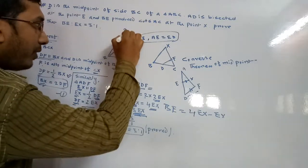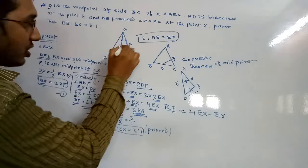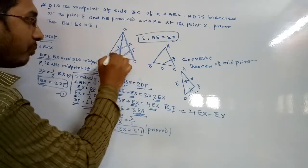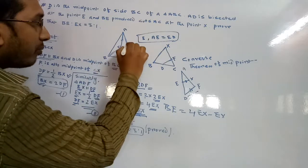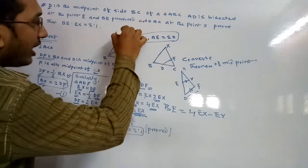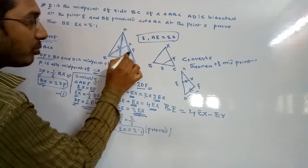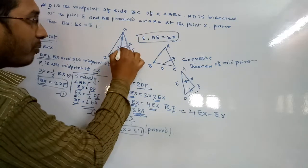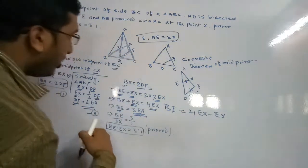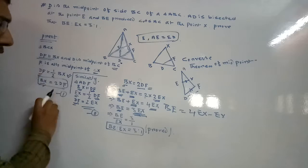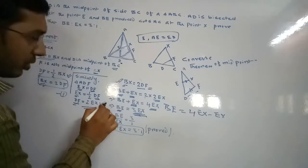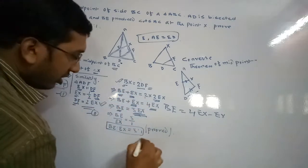So BE ratio EX equals 3 is to 1. In this question, we first took triangle BCX where DF is parallel to BX, then triangle ADF where DF is parallel to EX, giving EX equal to half of DF. Putting the second equation's value into the first equation gives us the answer.